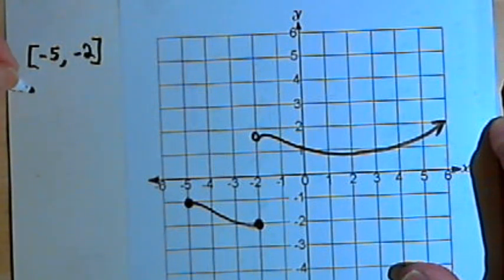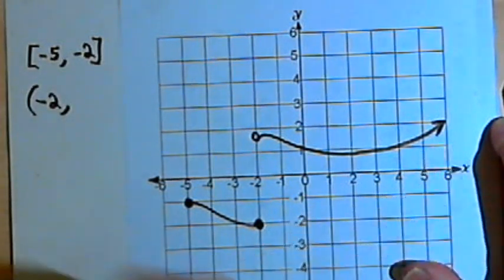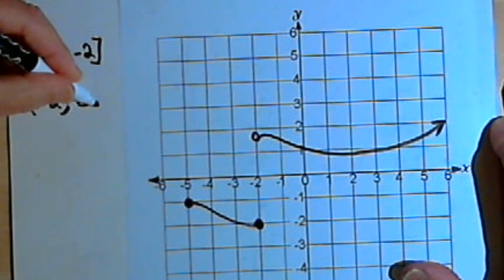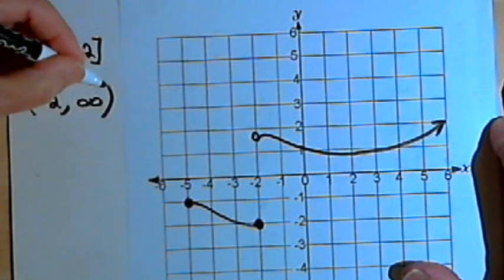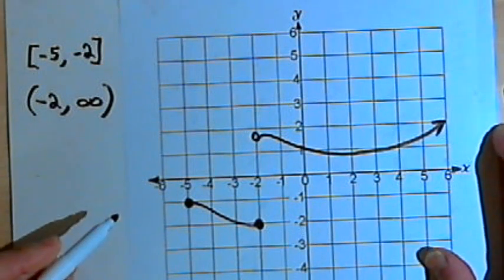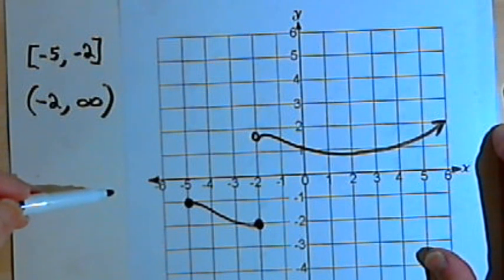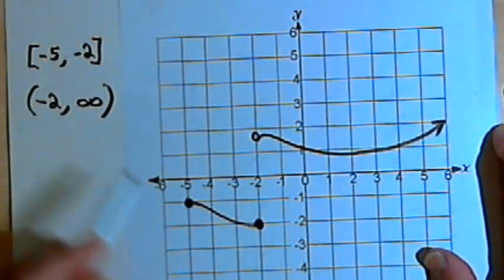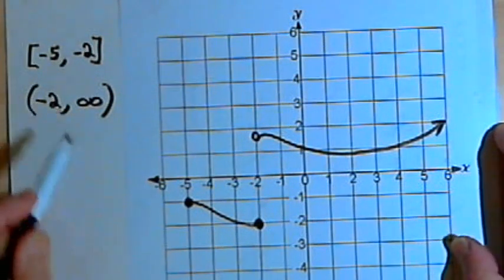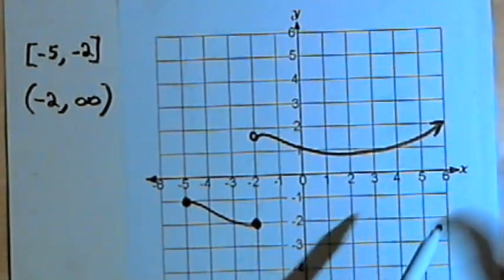After that, it started just after negative 2, so I'll use a round parenthesis, and it continued forever, up to infinity. So that's infinity, and with infinity we always use parenthesis, because we never quite reach infinity. So this was another example of a discontinuous function. We're able to use interval notation to show where it is continuous, the two stretches where it's continuous.